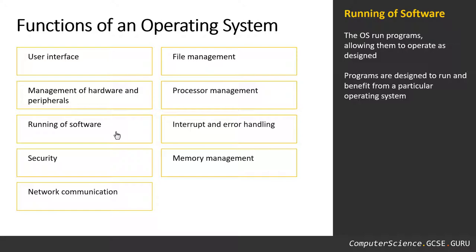Running of software. To run software, we need an operating system installed first, and then the software is installed on top of the operating system. Doing this allows programs to benefit from the features of an operating system, such as the existing communications, connected hardware, and file management systems. Without the operating system, you wouldn't be able to install programs to work.